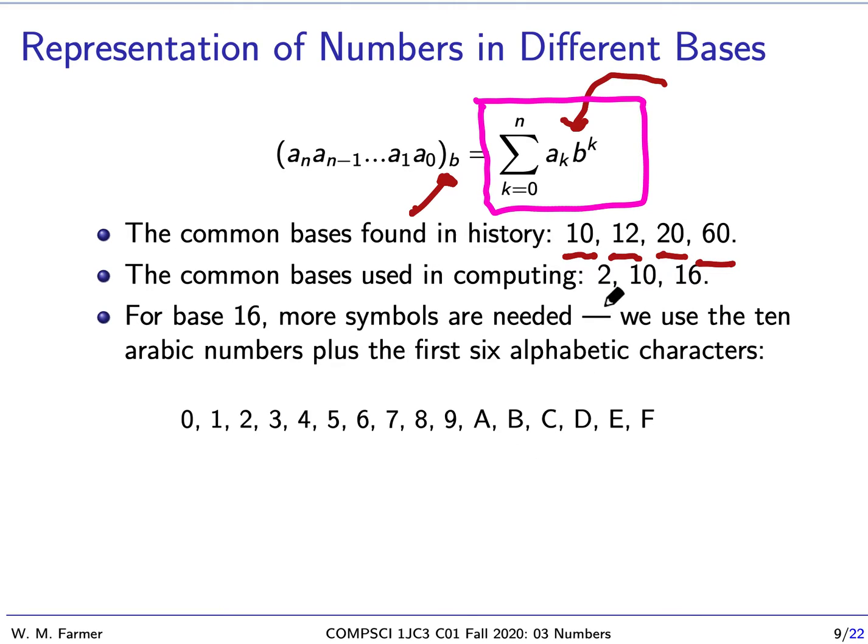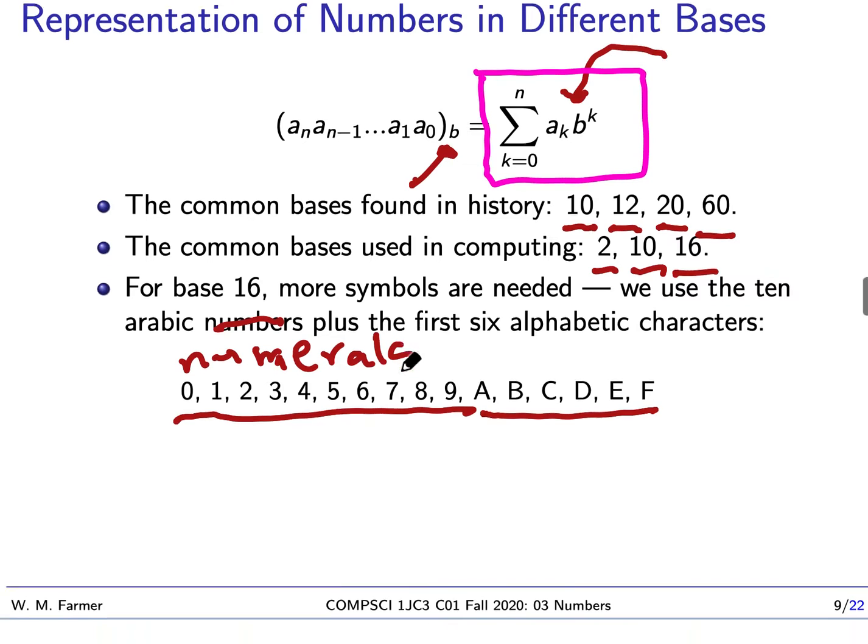Now, in computing, the bases we're going to use are two, ten, and sixteen. We use two because everything in our computer is organized as two. We use ten because that's what people use in everyday life. We use sixteen because sixteen is a compact way of writing base two. So, base sixteen, we're going to need sixteen digits. We're going to use the ten normal Arabic numerals and the six alphabetic characters.